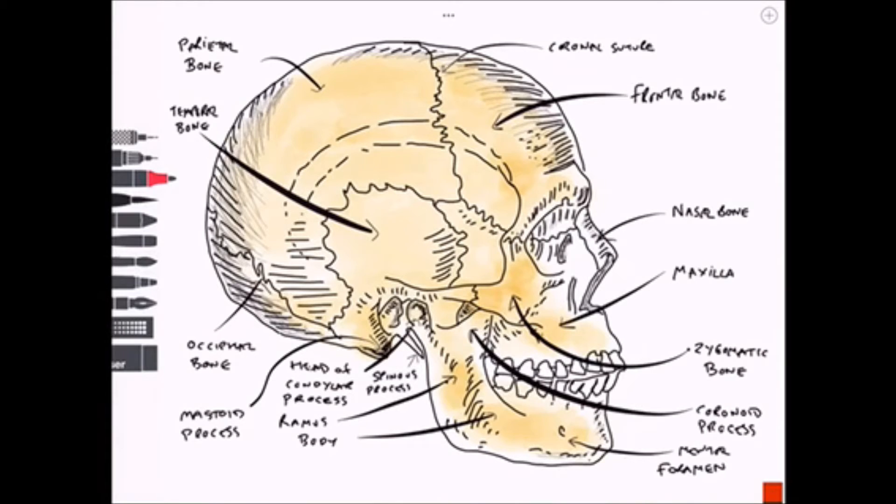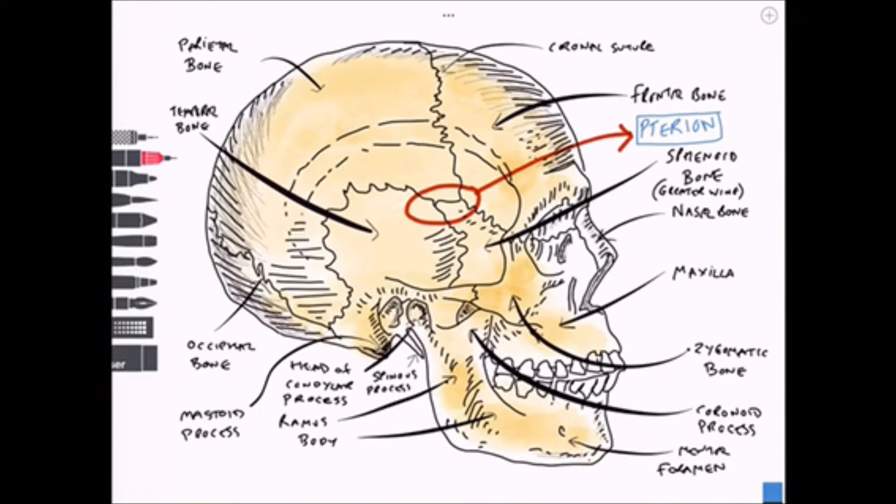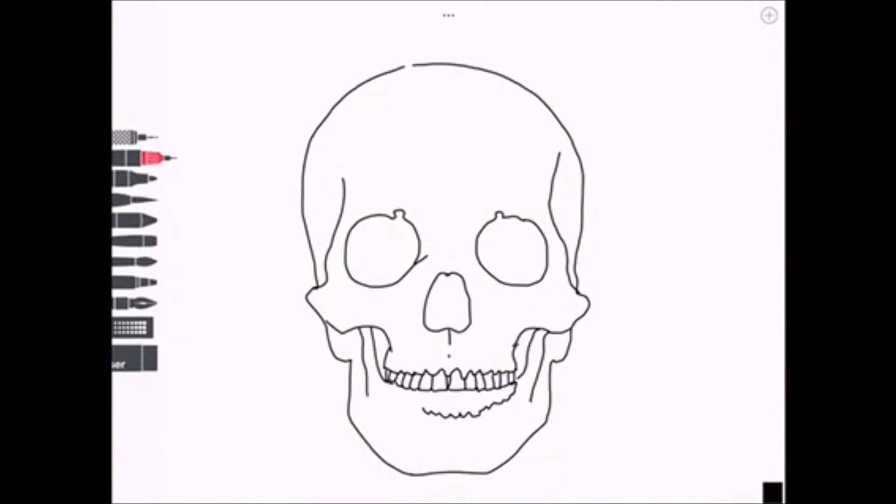To complete this diagram we now need to draw on the final bone here, the sphenoid bone, and this contributes to a structure, an h-shaped join between the sutures known as the pterion. This is a weak area because of the join and it has the middle meningeal artery running beneath it where during trauma that artery is susceptible to rupture causing an extradural hematoma.